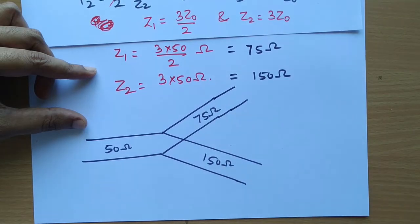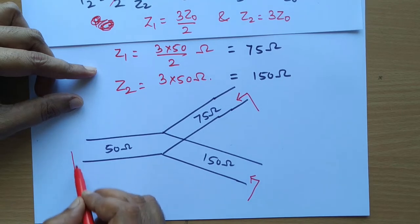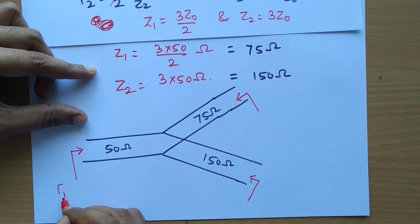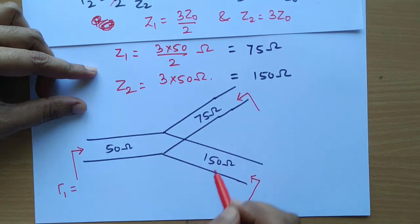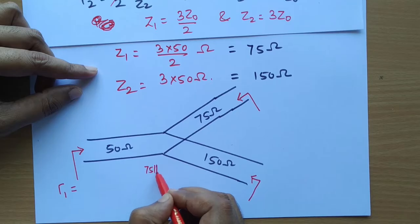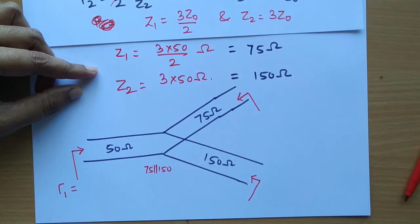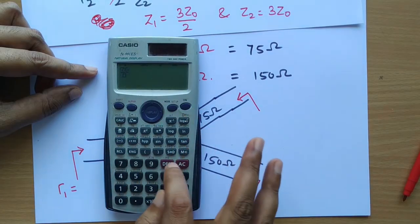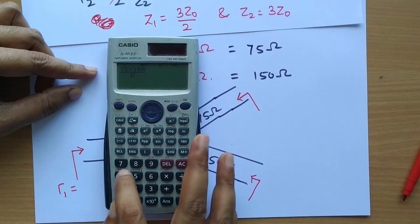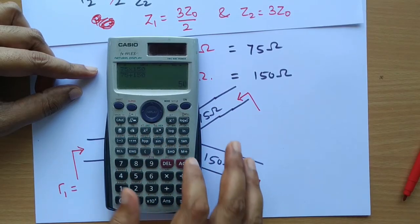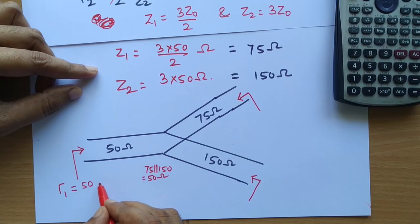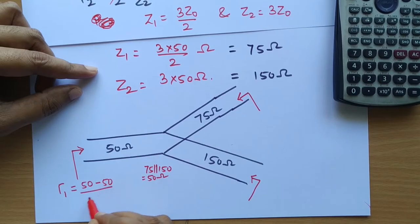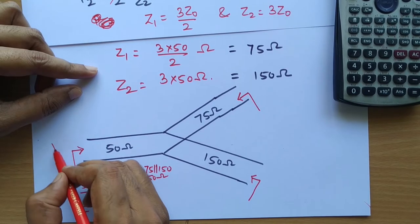Let us calculate the reflection coefficient looking into each port. Looking into port 1, the load is 75 ohms in parallel with 150 ohms: (75×150)/(75+150) = 50 ohms. So the reflection coefficient γ1 = (ZL − Z0)/(ZL + Z0) = (50 − 50)/(50 + 50) = 0. Port 1 is matched.